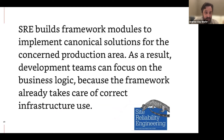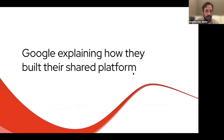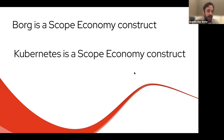This is straight from the SRE book: SREs build framework modules to implement canonical solutions for the concerned production area. As a result, development teams can focus on the business logic because the framework already takes care of correct infrastructure use. This is Google explaining how they built their shared platform — the scope economy construct. The Borg is really the scope economy construct that manifested at Google. Kubernetes is the spiritual evolution of Borg — also a scope economy construct.